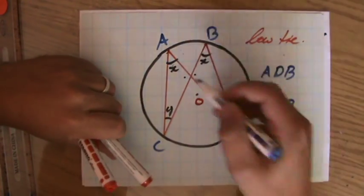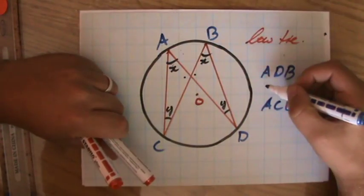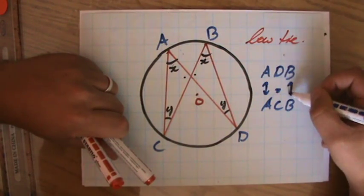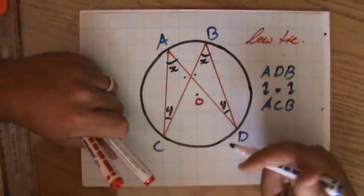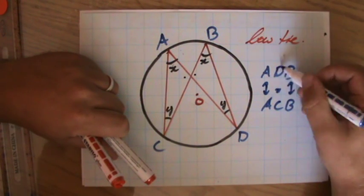I can say that angle ADB—that's this angle—is the same as ACB. You agree that ACB, so as long as those first letters and those last letters are the same angles in the same segment, then the angles there in the middle at point D and at point C are equal.